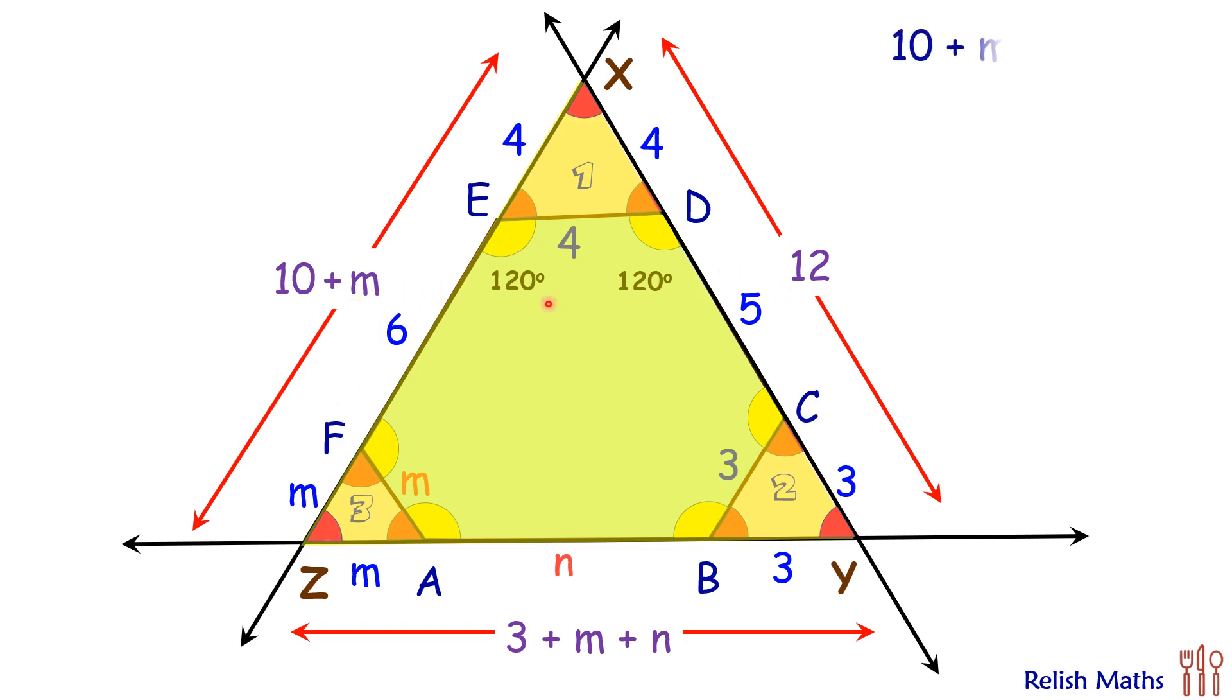So 10 plus M equals 12, solving this gives M equals 2 cm. Similarly, 3 plus M plus N equals 10 plus M, solving this gives N equals 7 cm. And that's our answer.